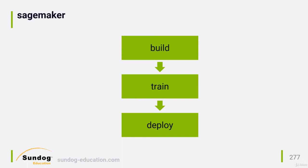You use that notebook to build your model — in our case, a recommender system algorithm. You can kick off the training of your model from that same notebook, or from the AWS console by setting up a training job.